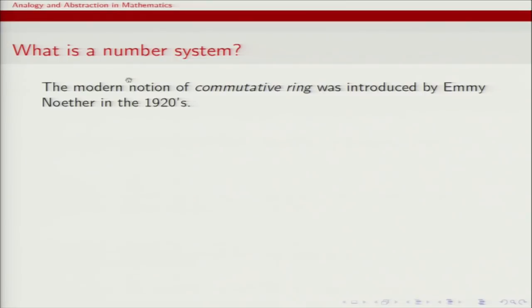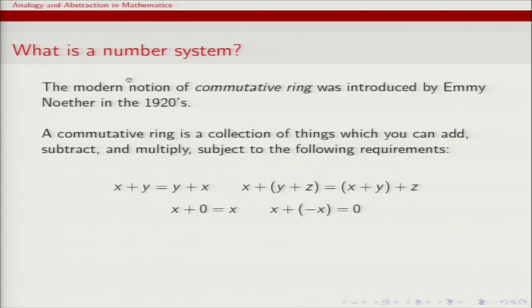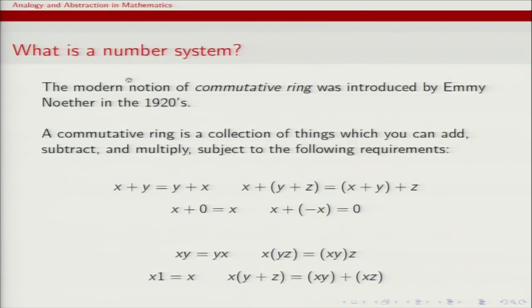These attitudes have very much shifted through the years. One inflection point is the emergence of abstract algebra in the early 20th century. The notion of commutative ring, more or less as used today, was introduced by Emmy Noether in the 1920s. A commutative ring is a collection of things you can add, subtract, and multiply, where addition and multiplication satisfy familiar rules like commutativity. Emmy Noether didn't originally require a unit for multiplication, though nowadays we usually do. This definition — the notion of a commutative ring — is a synonym for number system.